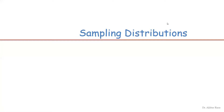In this video we are going to explain the concept of sampling distribution. Sampling distribution is an extension of probability distribution, which was covered in the last video.